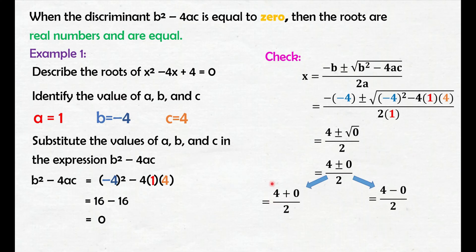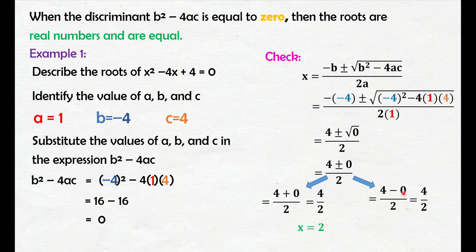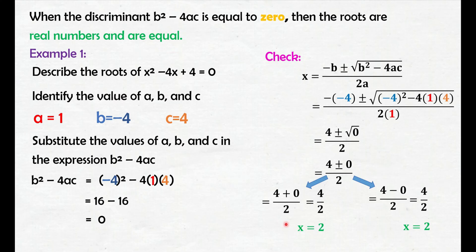4 plus 0, that is 4. Divide natin ng 2: 4 divided by 2, that is x equals 2. And yung isa naman, 4 minus 0, that is 4, so 4 divided by 2, makuha pa rin natin is 2. By checking, totoo nga yung sinabi dito — kapag 0 yung discriminant, makukuha natin yung roots or solutions are real numbers and are equal. Nakita natin dito na magkapareho yung nakuhang roots or solutions.